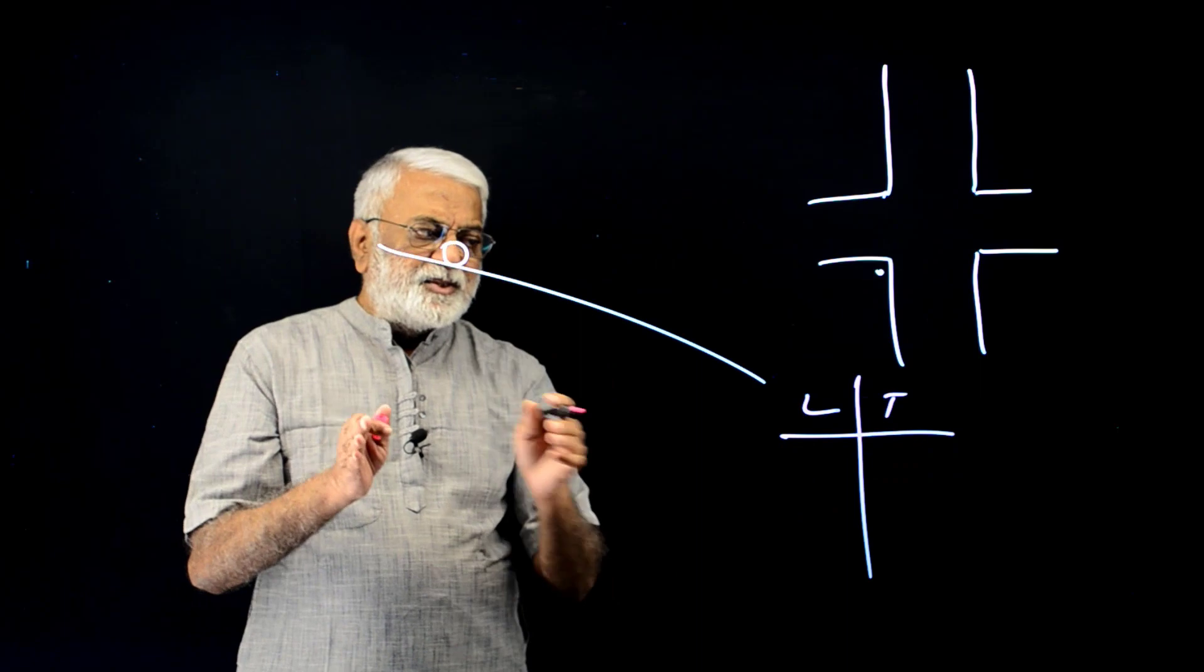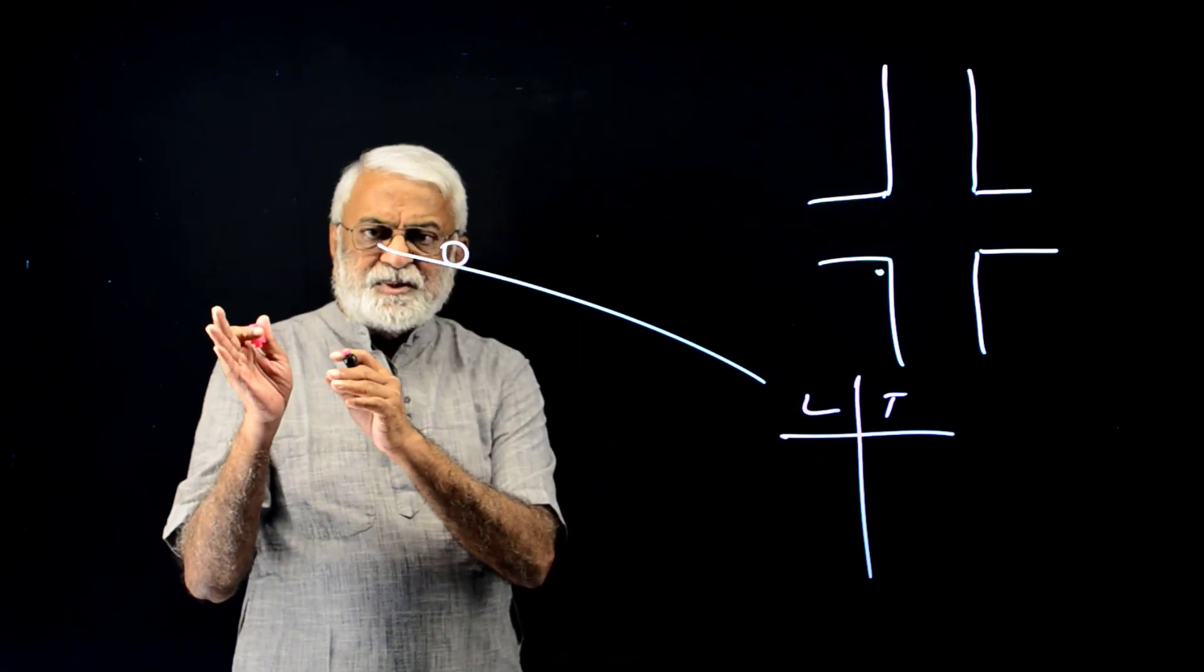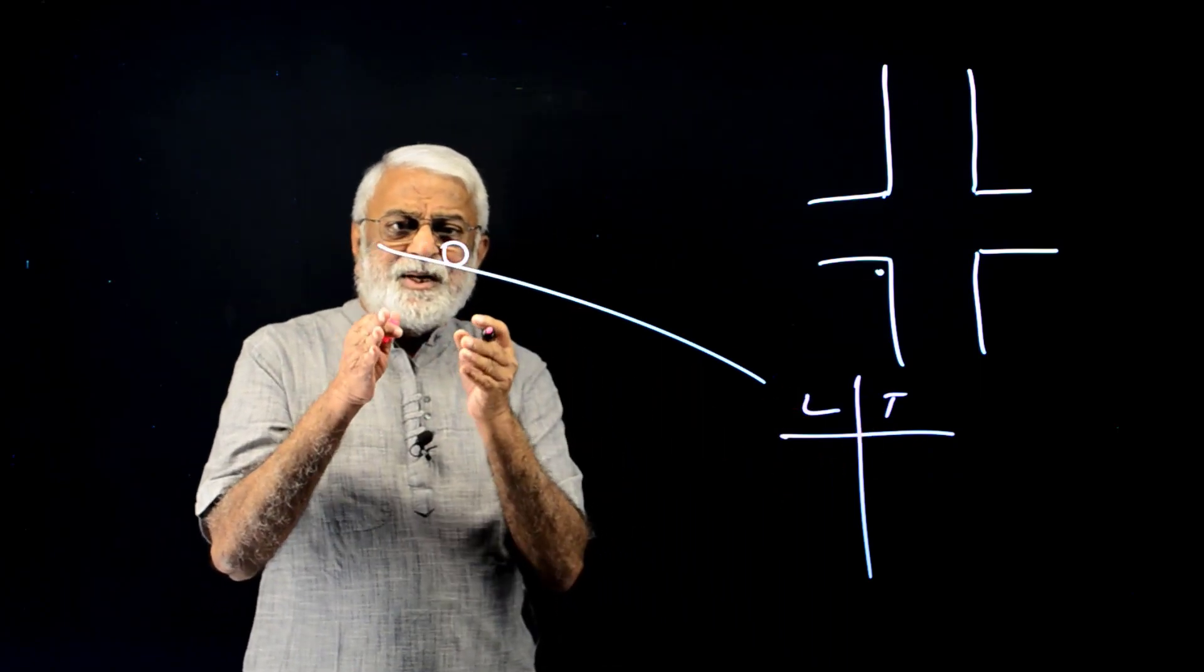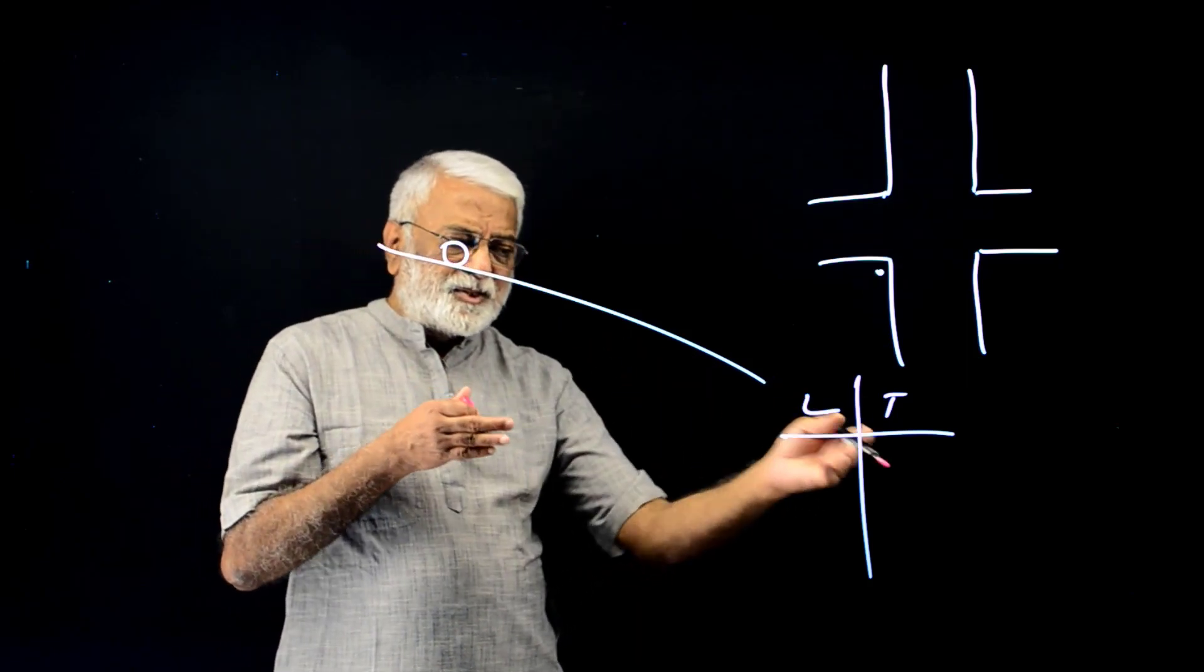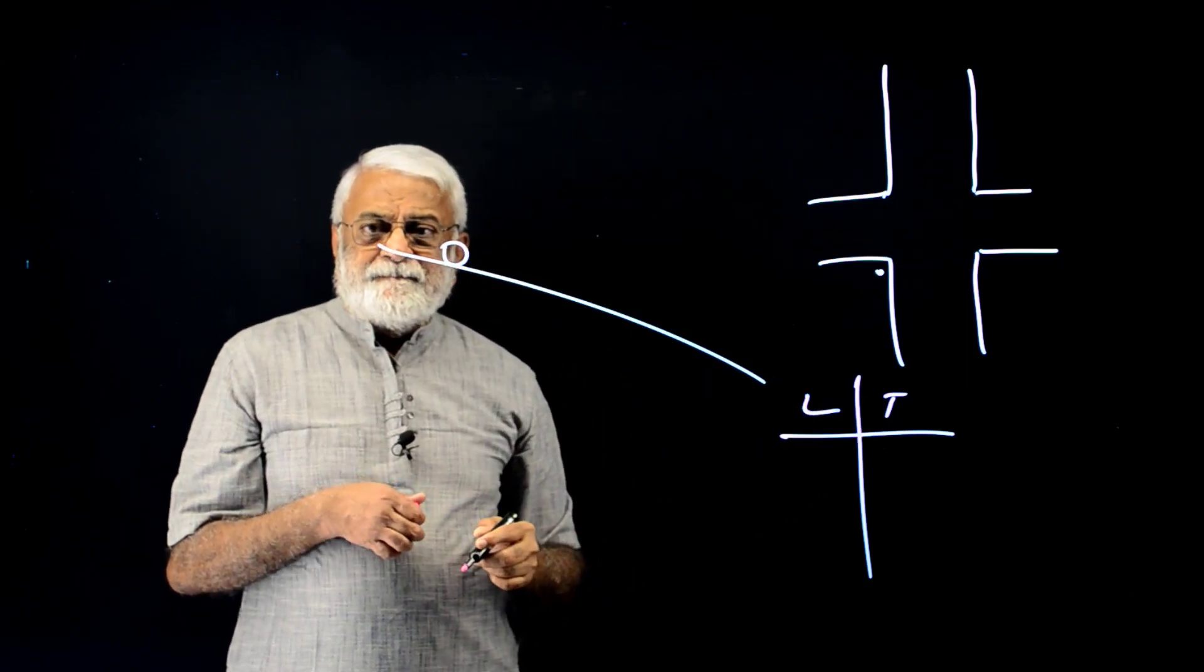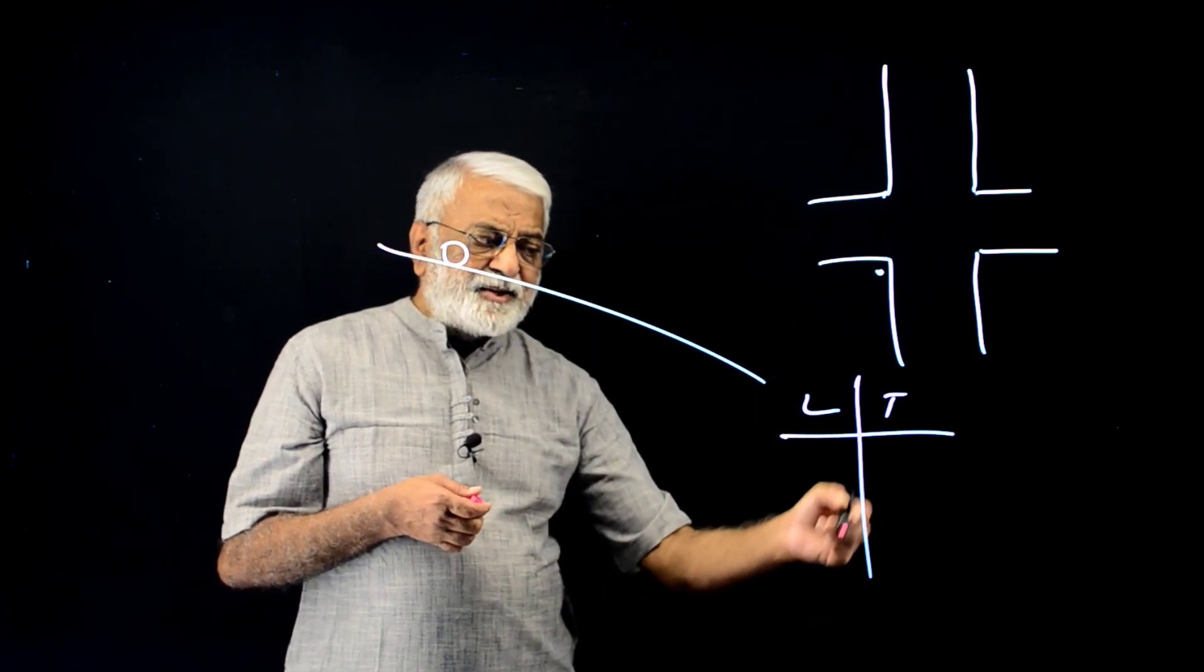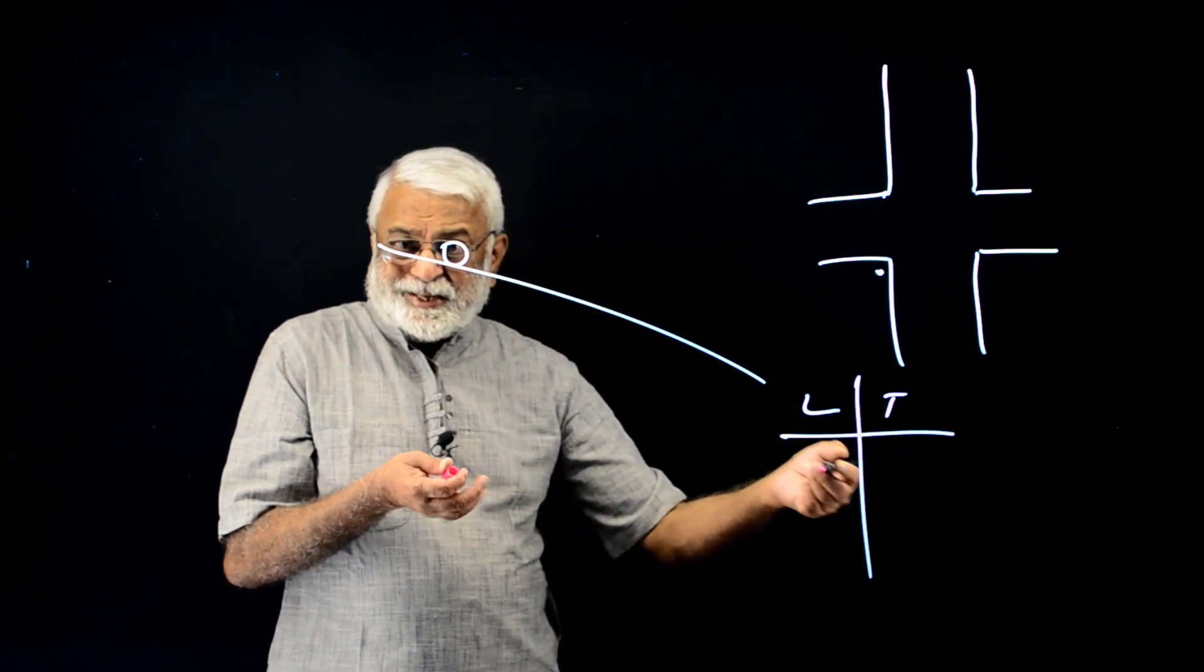So he doubles the distance and measures the time. Triples the distance, measures the time. Increases the length, the distance in regular intervals and then measures time. He can definitely make out that as L increases, T increases. But what is the exact order?